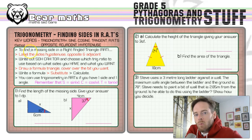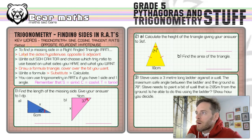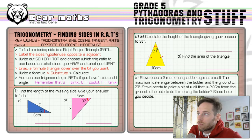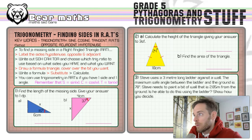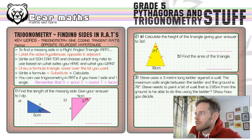Hi folks, welcome to video number 176. This one is on trigonometry and finding sides in right-angled triangles. The key words are: trigonometry, sine, cosine, tangent, RATs, opposite, adjacent, hypotenuse — lots of words there.